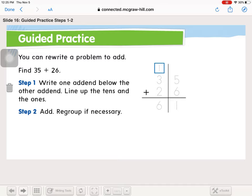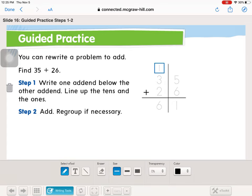It says you can rewrite a problem to add. Find 35 plus 26. Write one addend below the other addend. Line up the tens and the ones. Add and regroup if necessary. So let's start with step 1. Write one addend below the other. So here are our numbers. 35 plus 26. Could be the other way too though, right? We could add 26 plus 35. Line up the tens and the ones. They're lined up, aren't they? And then add and regroup.